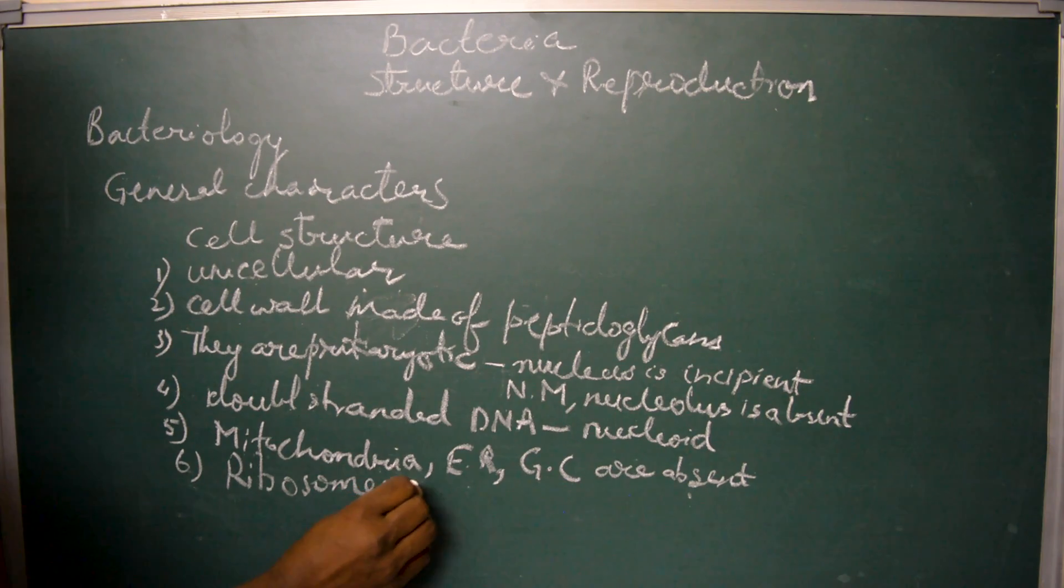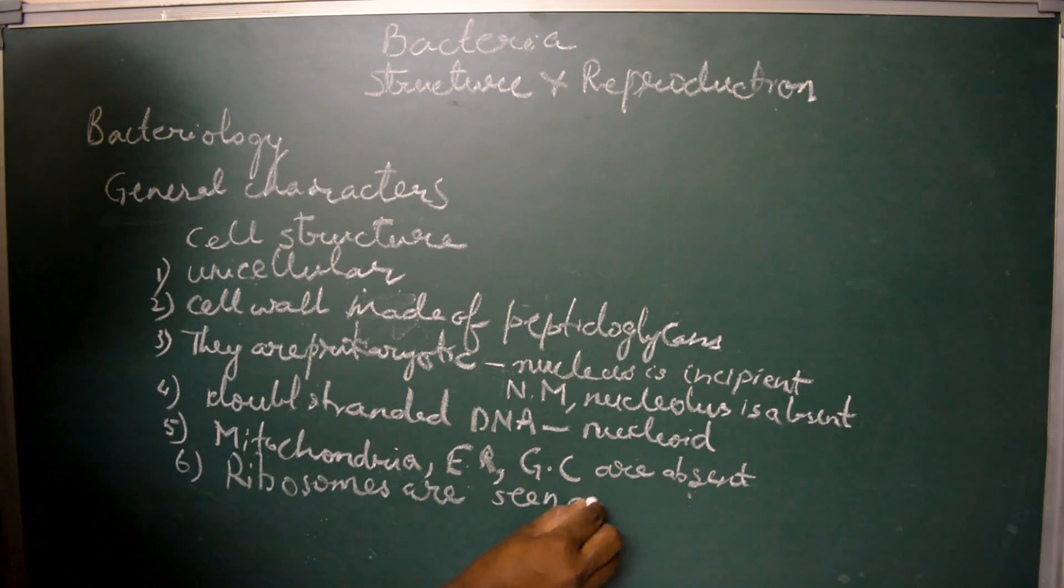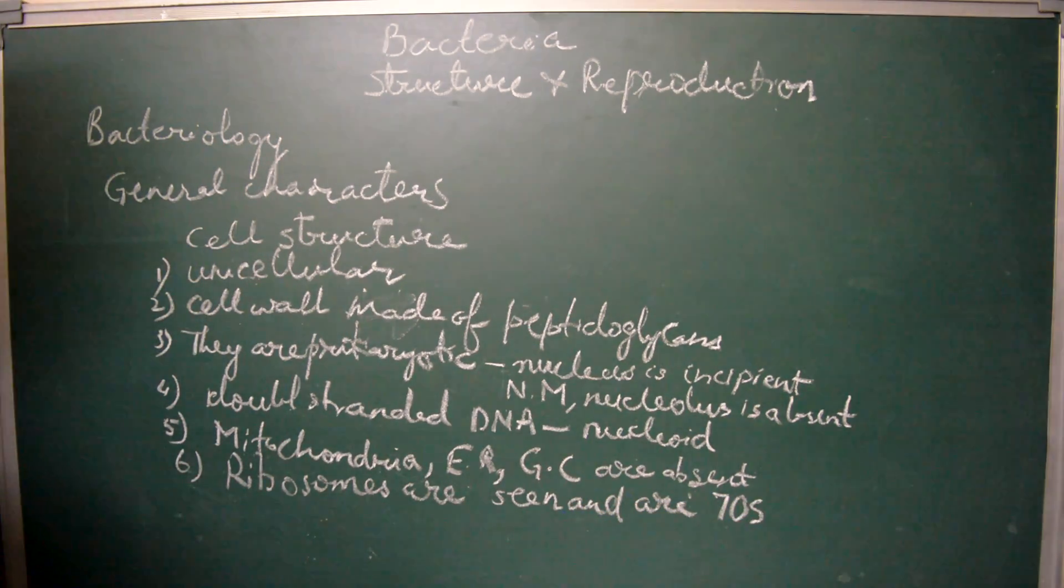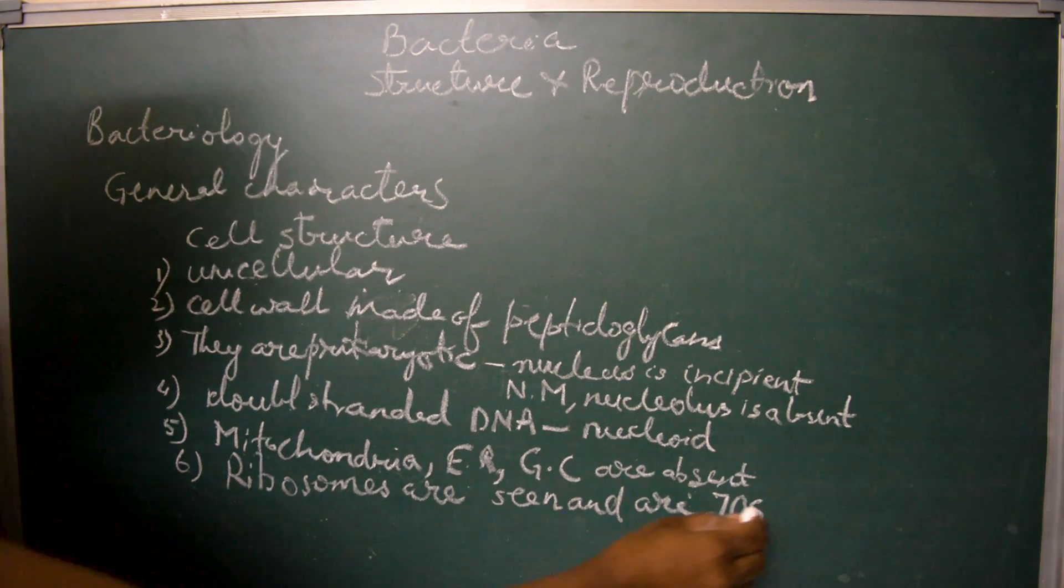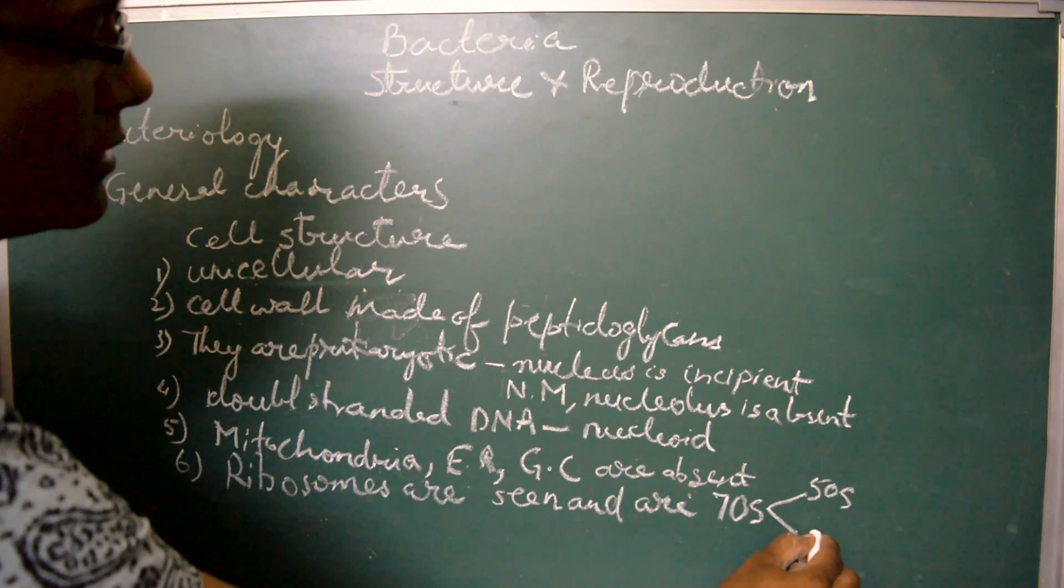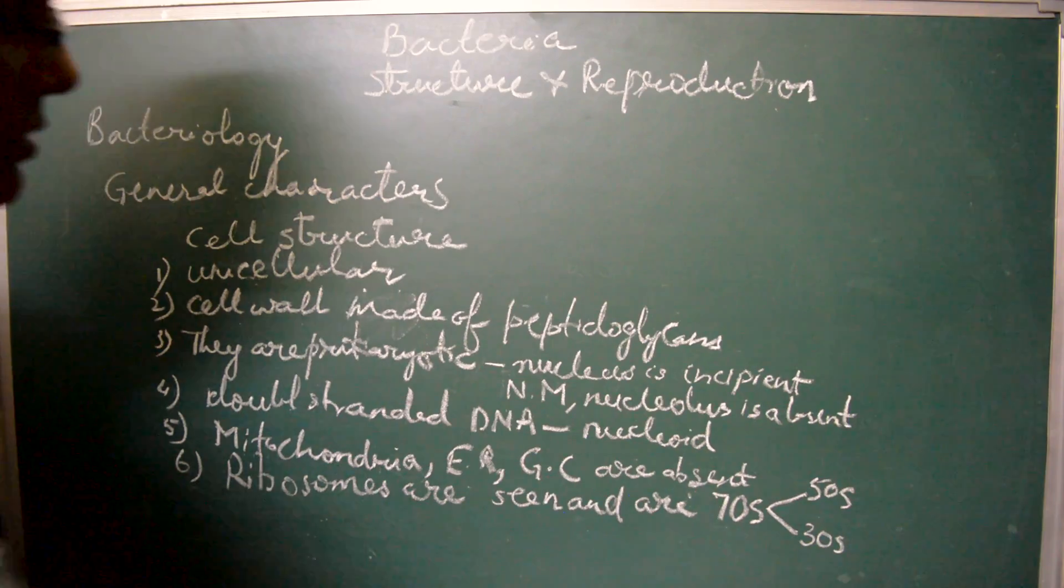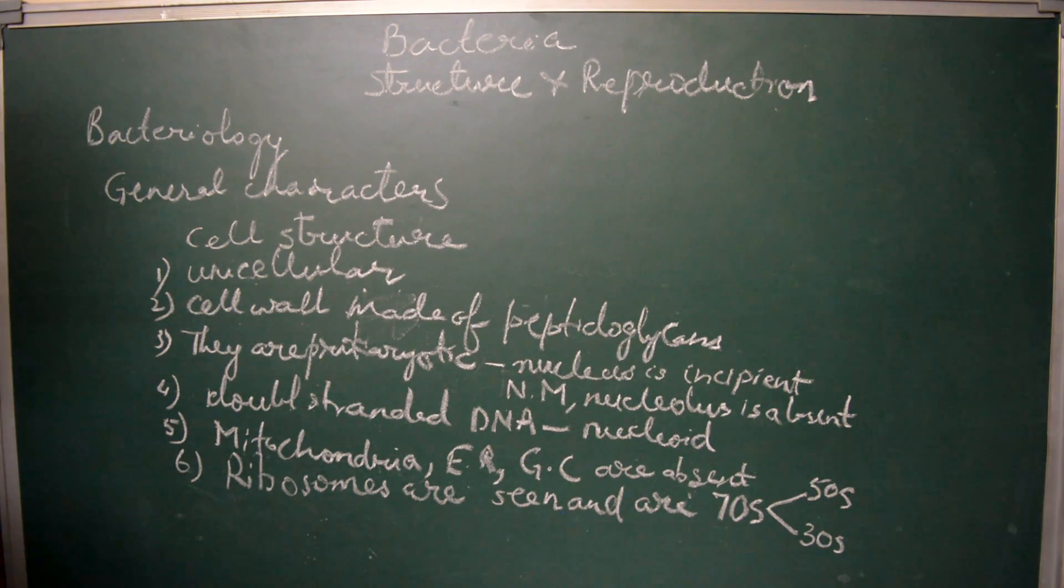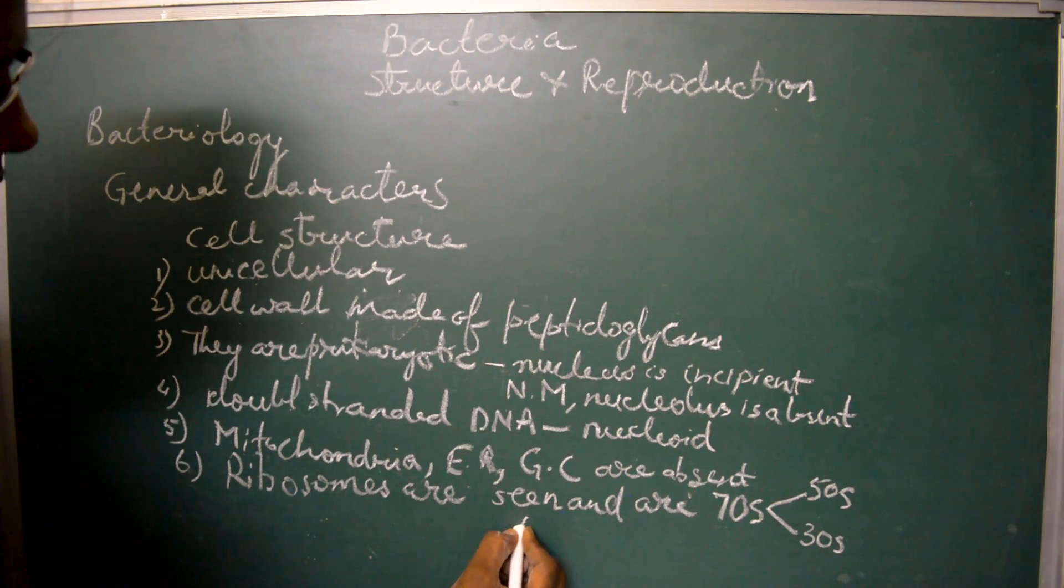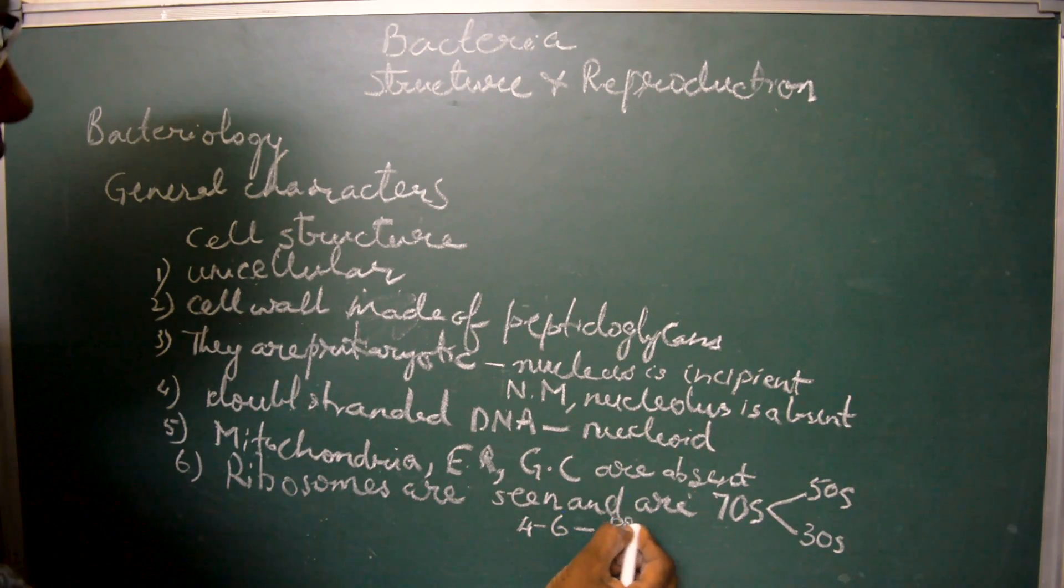Ribosomes are seen and are 70s type of ribosomes. They have two subunits, one which belongs to 50s subunit which is the larger subunit and the other one is the 30s subunit. In younger bacterial cells the ribosomes occur in clusters of 4 to 6 ribosomes together which are called polysomes.